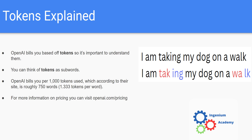You just saw the usage dashboard that showed you how much money you had spent over some range of time. Now I want to talk about how OpenAI actually charges you for the API usage. How they charge you is based off tokens used.